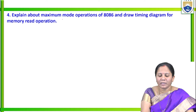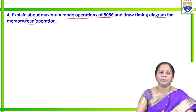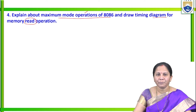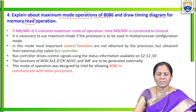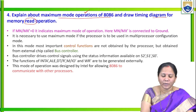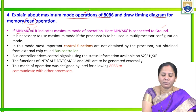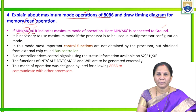The fourth question asks to explain maximum mode operation of 8086 and draw the timing diagram for read operation. In maximum mode, all control signals are not present within 8086; they reside in a separate block called the bus controller. To operate in maximum mode, the MN/MX̄ pin must be connected to ground (logic 0), because MX̄ is active low. Maximum mode is called multiprocessor mode.